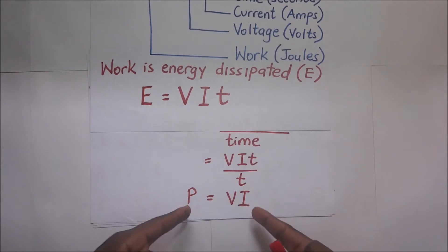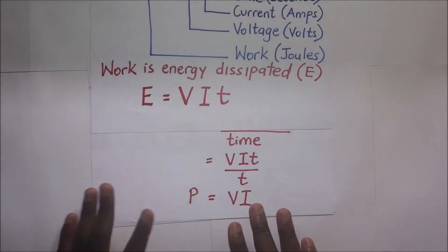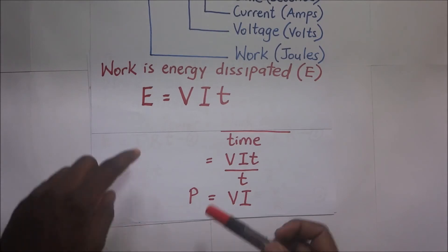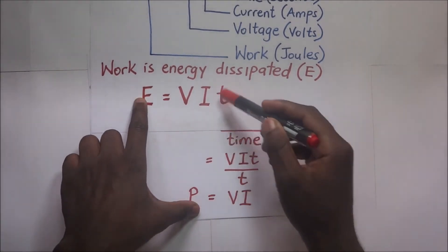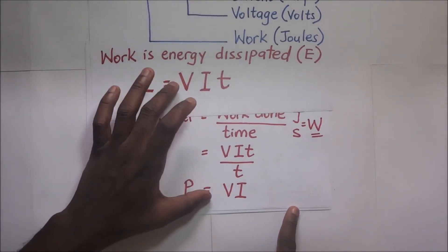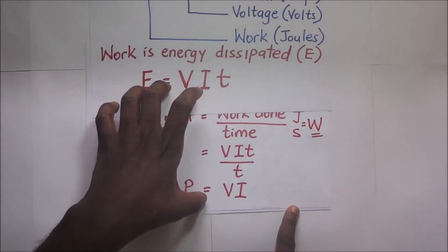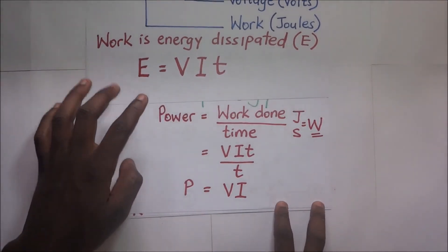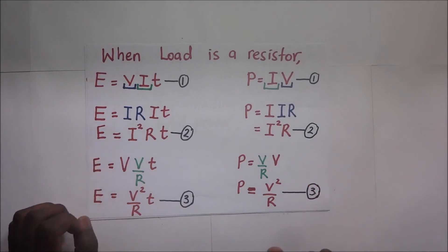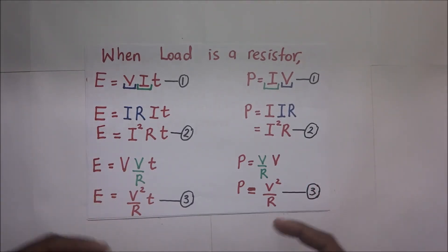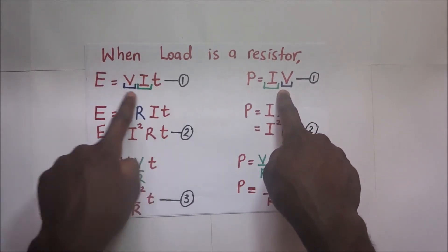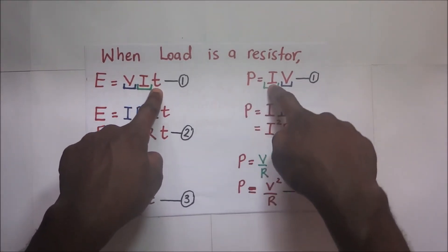These two expressions — E = VIT for energy and P = VI for power — work for any load. However, sometimes the loads we deal with may be resistors. When the load is a resistor, we need to introduce the component of resistance. These original expressions, E = VIT and P = IV, apply to any load. But when dealing with a resistor, we take account of that resistance and derive further formulas.